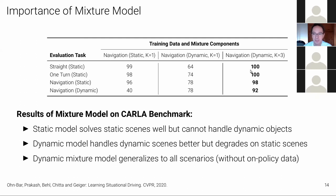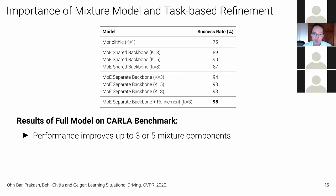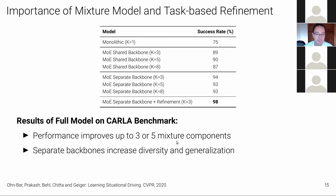Without task-based refinement, using only off-policy data, the mixture model already improves. Adding task-driven refinement with rewards gives a further ~4% success rate improvement. Performance also improves with more mixture models, up to 3 to 5 mixture model components. 100% means all test episodes successfully completed.